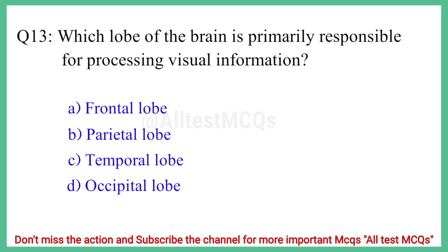Question No. 13: Which lobe of the brain is primarily responsible for processing visual information? The correct answer is option D: Occipital lobe.